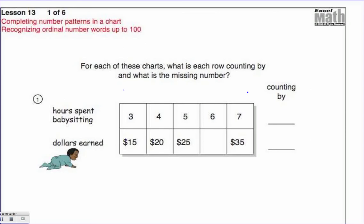For each of these charts, what is each row counting by and what is the missing number? Hours spent babysitting: if you spend three hours babysitting you earn $15, four hours babysitting you earn $20, five hours babysitting $25.